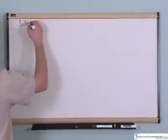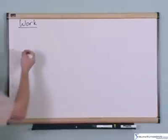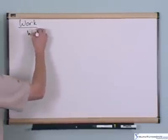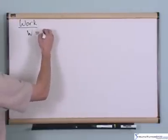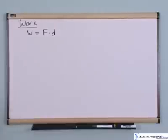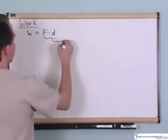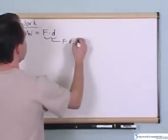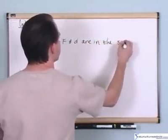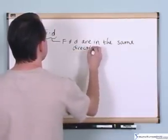What we're going to talk about in this section is the concept of work. Very simply, the work done on an object is equal to the force applied to the object times the distance traveled by the object, where F and D are in the same direction.